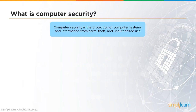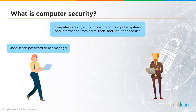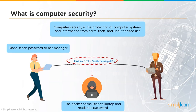Computer security is the protection of computer systems and information from harm, theft, and unauthorized access. The objective is to protect information and the system from any harm from external or internal hackers. In this scenario, Dina is trying to send information to her manager, but it's intercepted by a hacker who obtains her password and can then steal data from her.